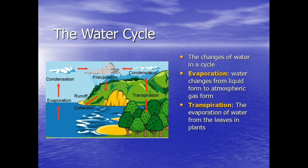Let's start off with the water cycle, which should be a review. You've been learning about the water cycle since you've been in about third grade. The water cycle is the changes of water and the way that it is within an area. We have evaporation, transpiration, condensation, and runoff. Evaporation is when water changes from liquid to atmospheric gas form, and transpiration is the evaporation of water from plants and leaves within trees.